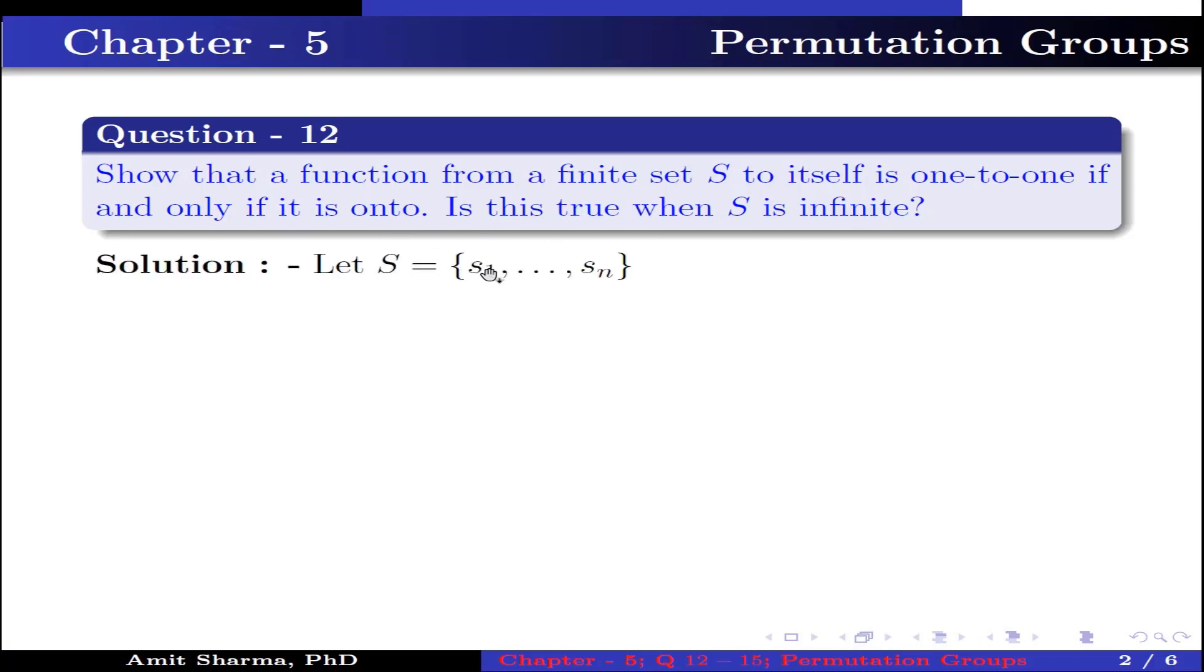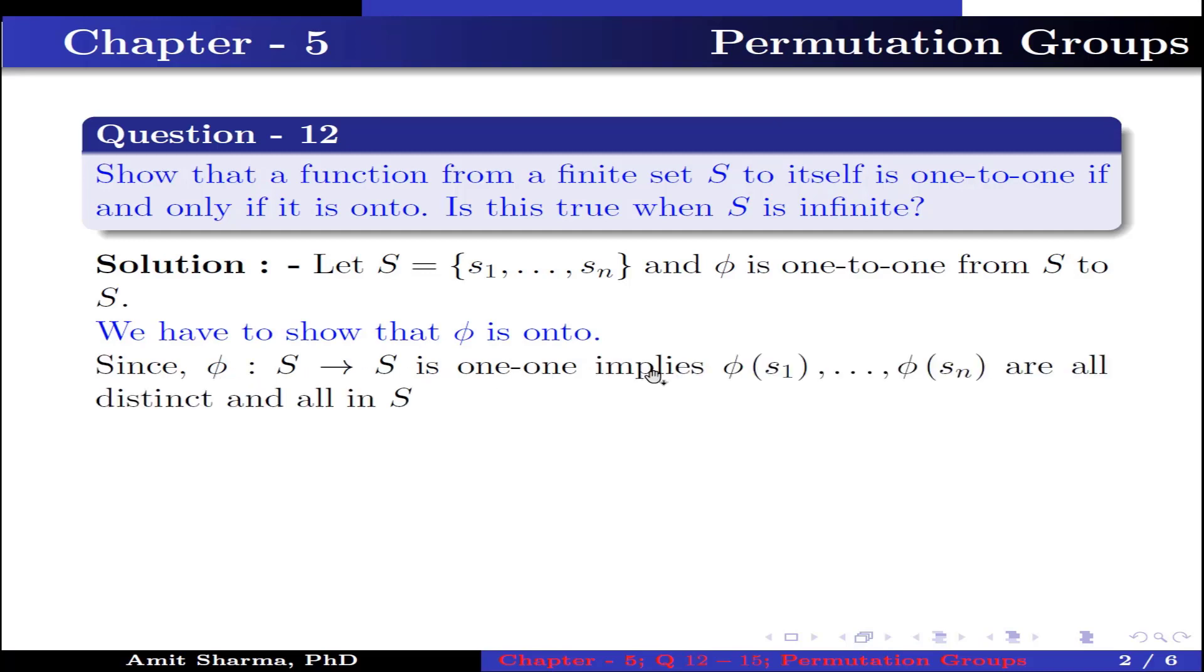Solution: Let S = {s₁, s₂, ..., sₙ} and φ is one-to-one from S to S. We have to show that φ is onto. Since φ from S to S is one-to-one, this implies φ(s₁), ..., φ(sₙ) are all distinct and all belong to S. This implies φ(S) = S. Therefore, φ is onto.